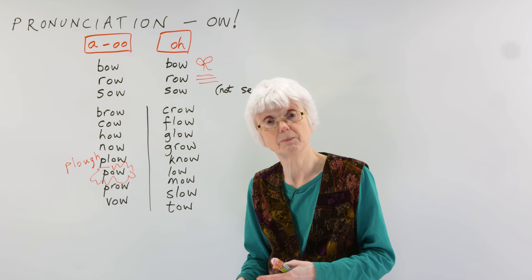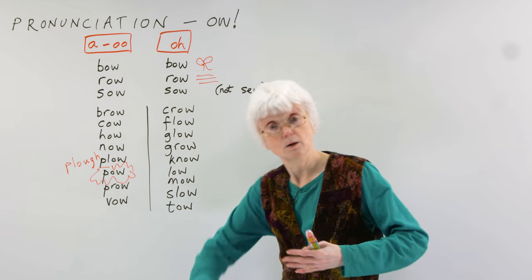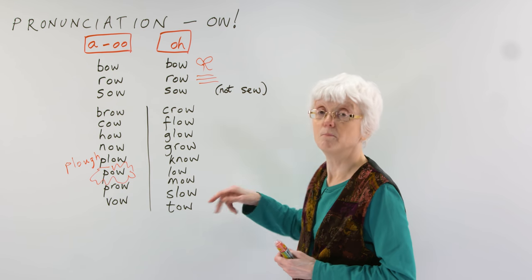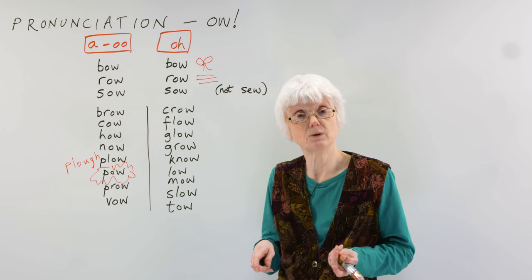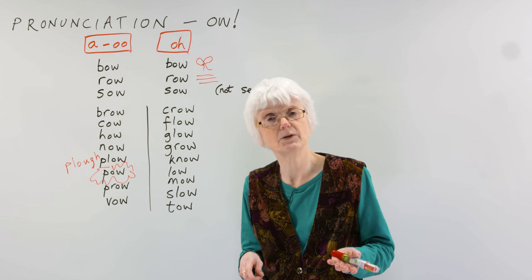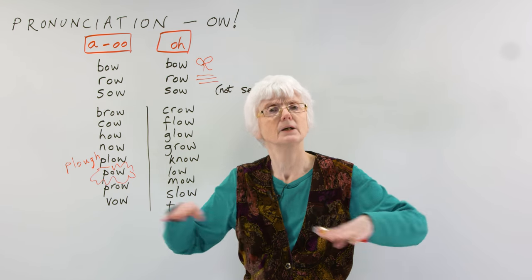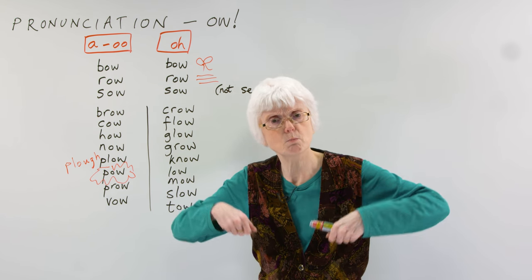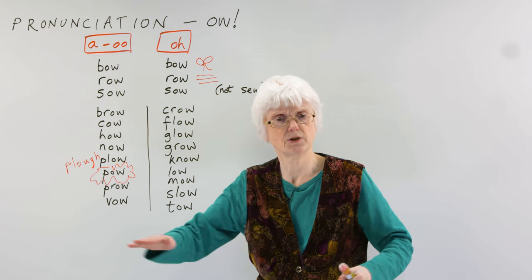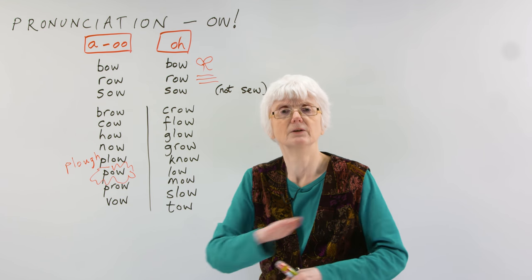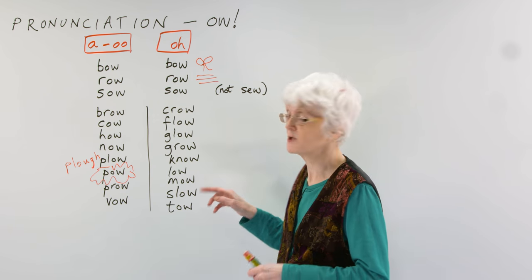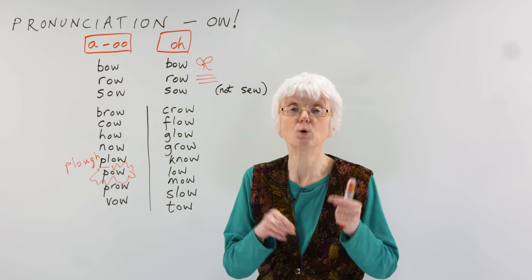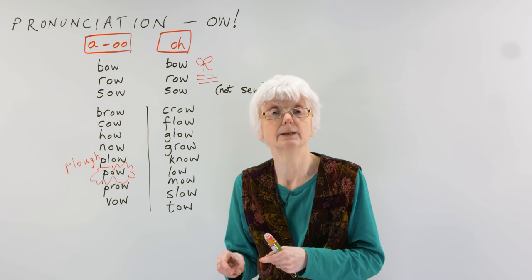Know, to know something. Low is down here, the opposite of high. Mow, another agricultural word or in your own garden. If you have grass, the grass grows, you have to cut it. So you mow the grass. You cut it to a low level to keep it tidy. To mow the grass, mow the lawn, and you have a machine called a lawn mower.